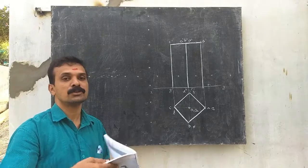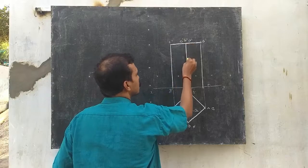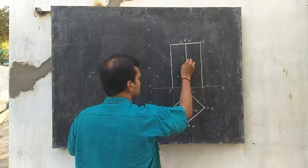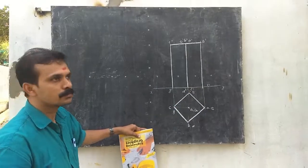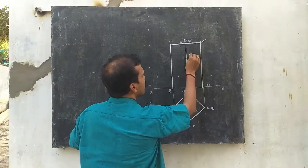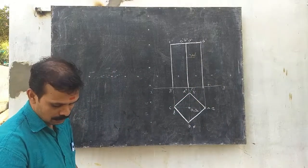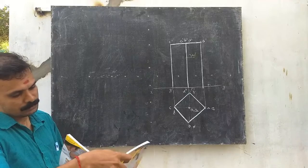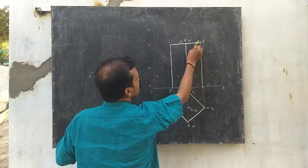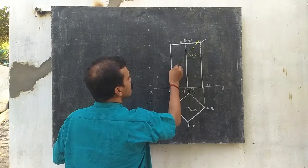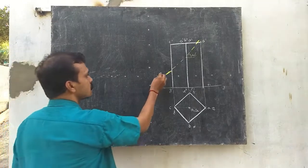The section plane meets the axis at a distance of 20 mm from the top. So if we draw a line at an inclination of 60 degrees passing through the point 20 mm from the top, this will be the section plane — shown as a vertical trace in the front view.